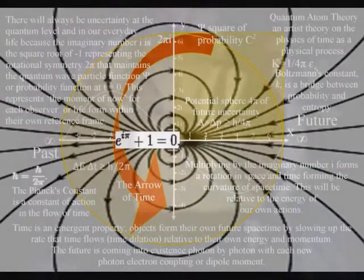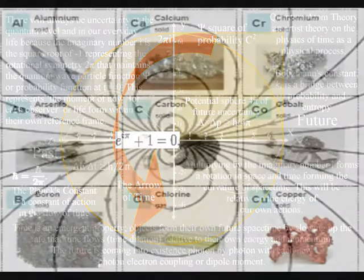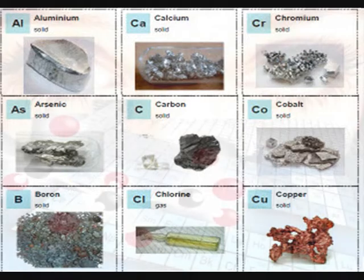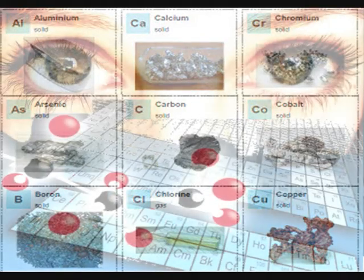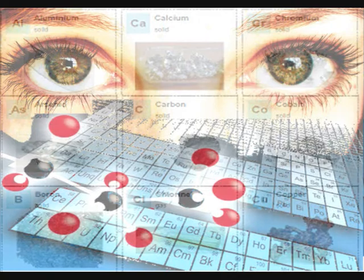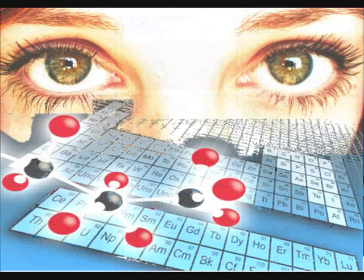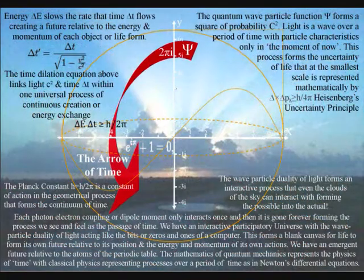The same process is responsible for all the properties of the chemical elements that we have in the periodic table, including all chemical bonding with an exchange of photon energy whenever the bonds form or break.